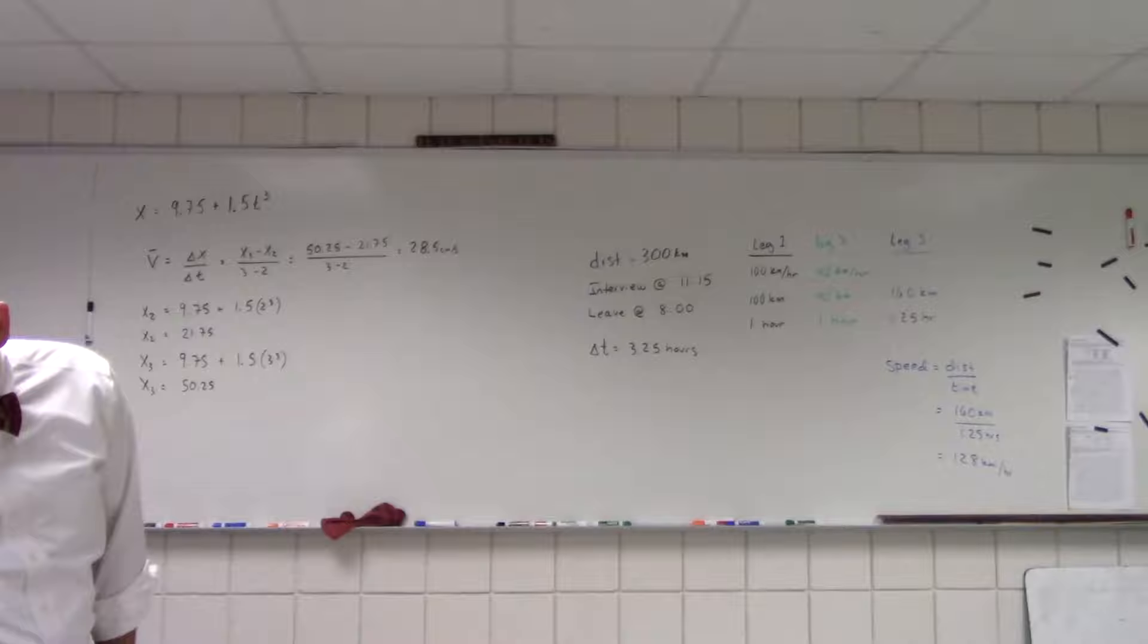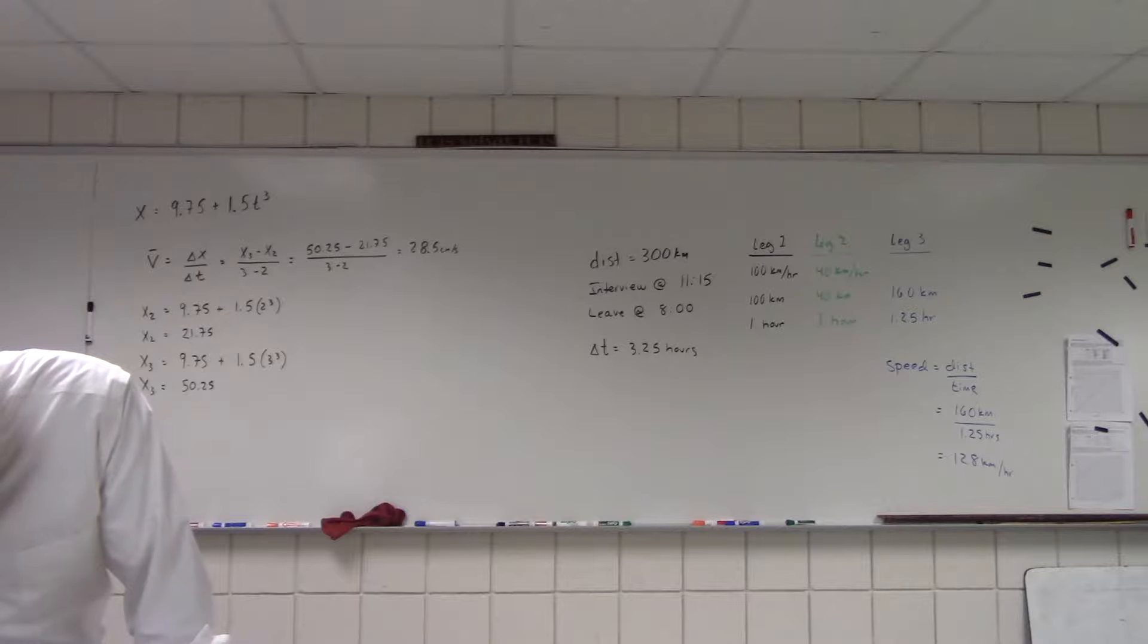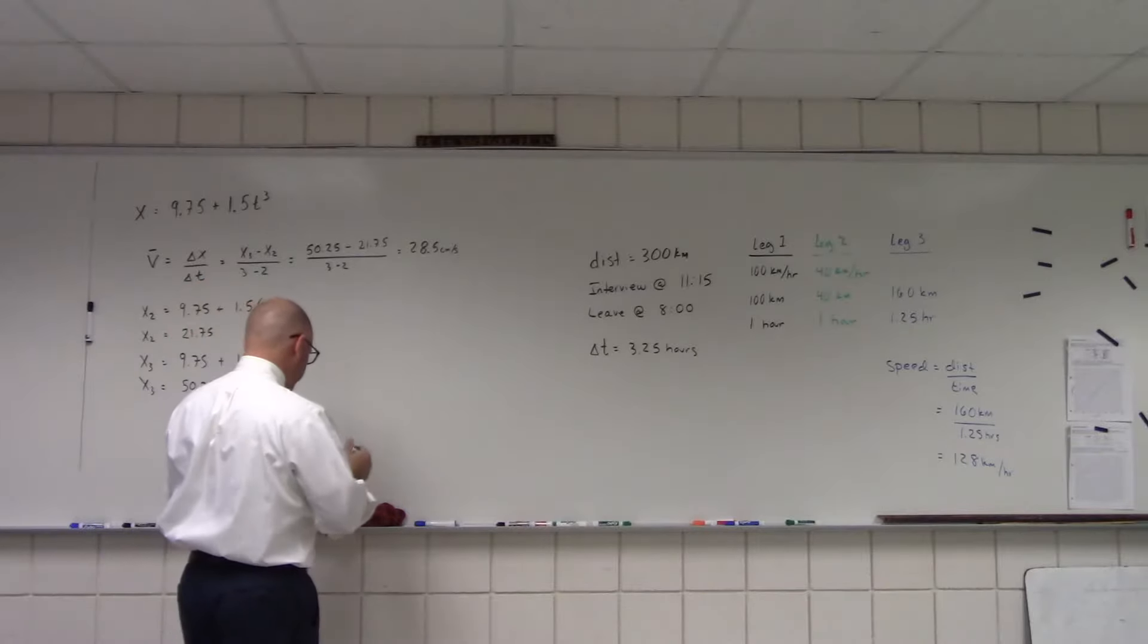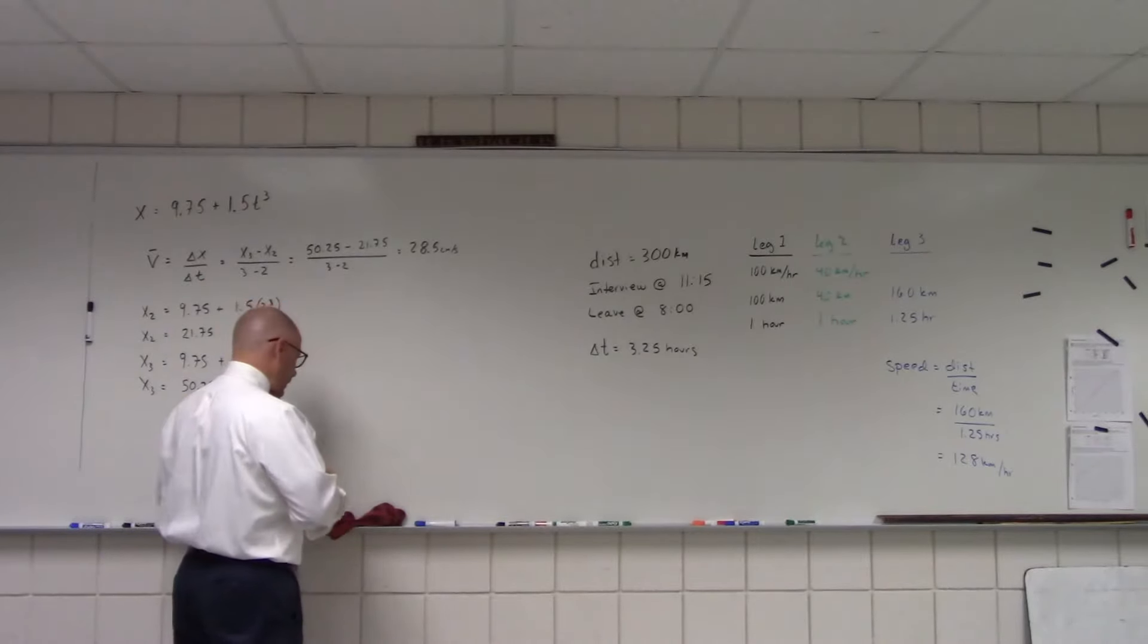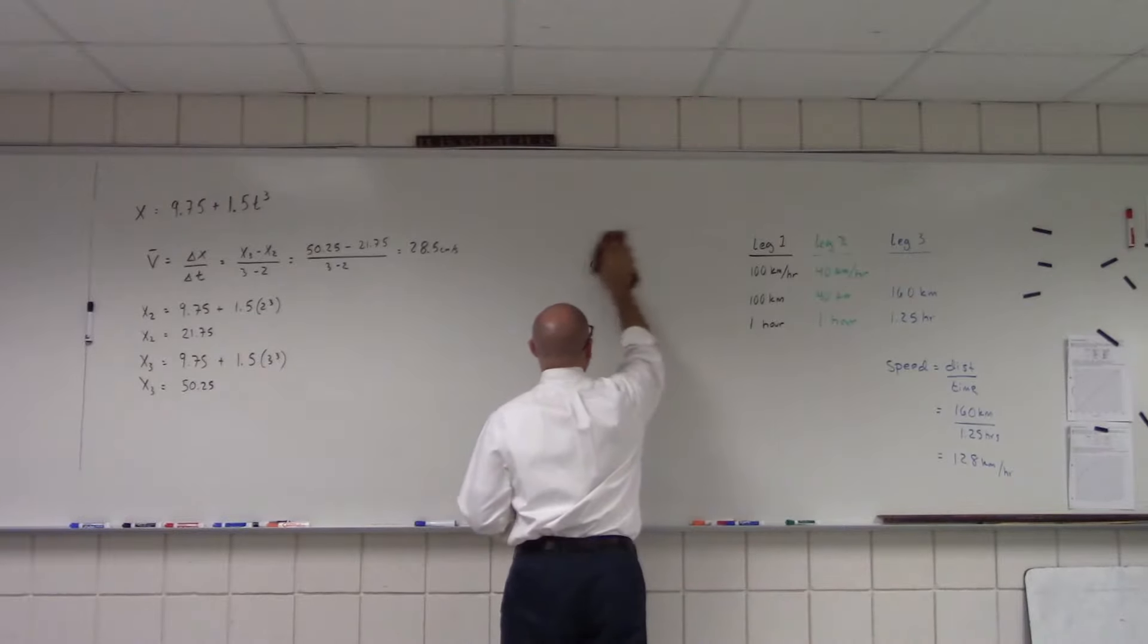So, the next question is the instantaneous velocity at t equals 2 seconds. So this is going to be a little bit different for us because it's not asking us for the average velocity. It's asking us for the instantaneous velocity. And that's a different ballgame.